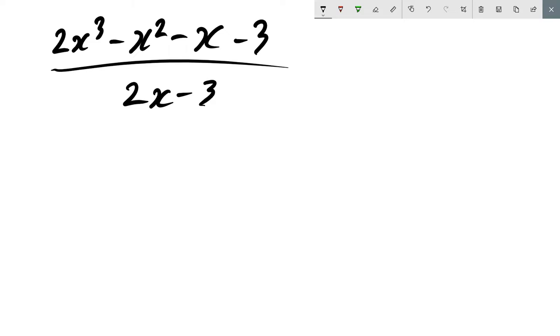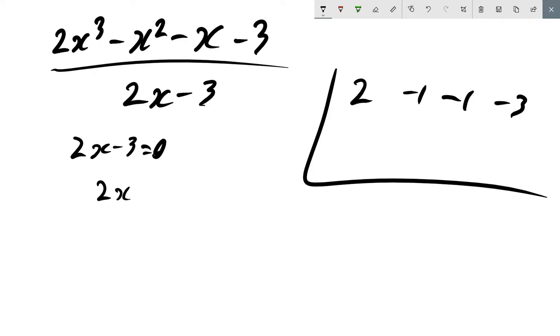Now let's use synthetic division. We'll draw it upside down, get the coefficients 2, minus 1, minus 1, minus 3. Now null factor law this, so 2x - 3 = 0, 2x has to equal 3, x equals 3 over 2. Use that result, write it there.